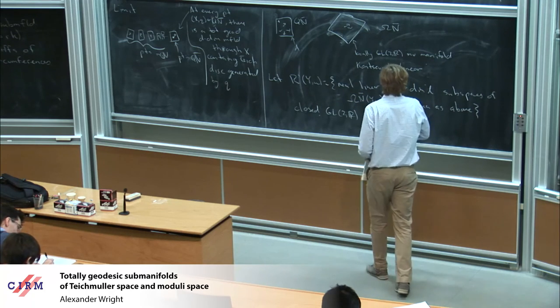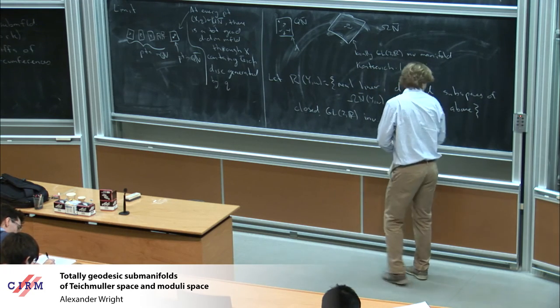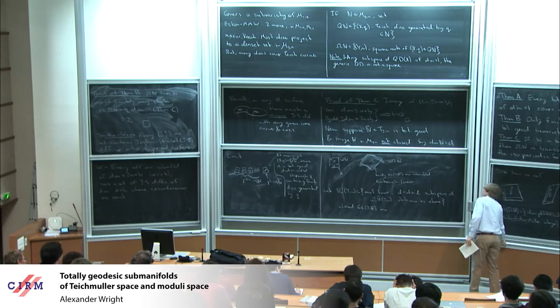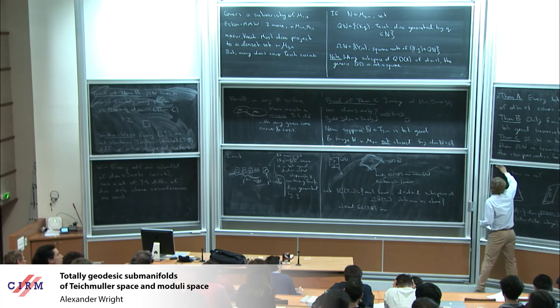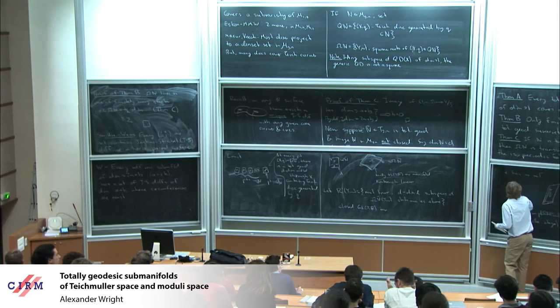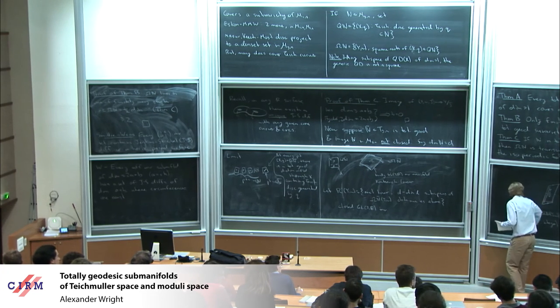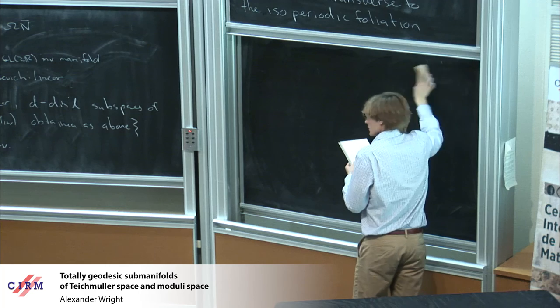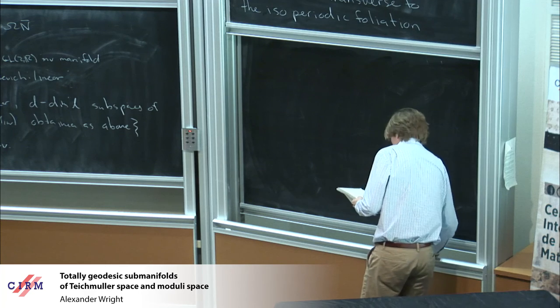Now I lift this to Ω(N-bar). At each point I get a submanifold given by all the square roots of all quadratic differentials that generate Teichmüller disks in this D-dimensional bit of totally geodesic submanifold. That gives a locally GL(2,R) invariant manifold. A folklore result of Kontsevich proves that any locally GL(2,R) invariant manifold is actually linear. So this is something linear containing the square root of q.